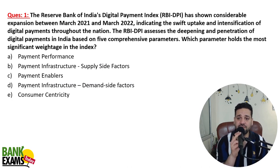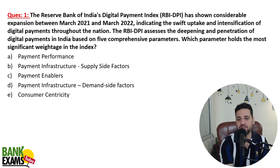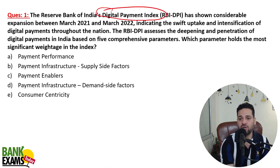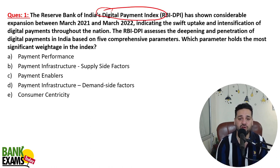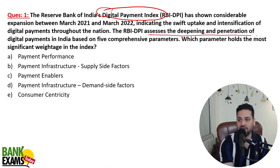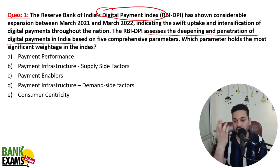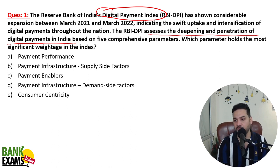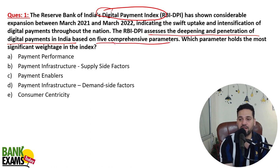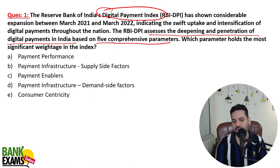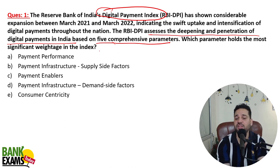So RBI's Digital Payment Index — what is the Digital Payment Index? To track the performance of digital payments in India and to assess the deepening and penetration of digital payments in India, there is an index by RBI. We call it the Digital Payment Index. There are five comprehensive parameters, and there are proper weightages assigned to each of these parameters.